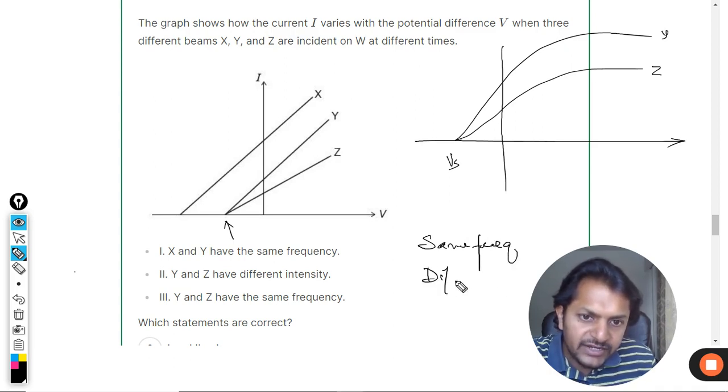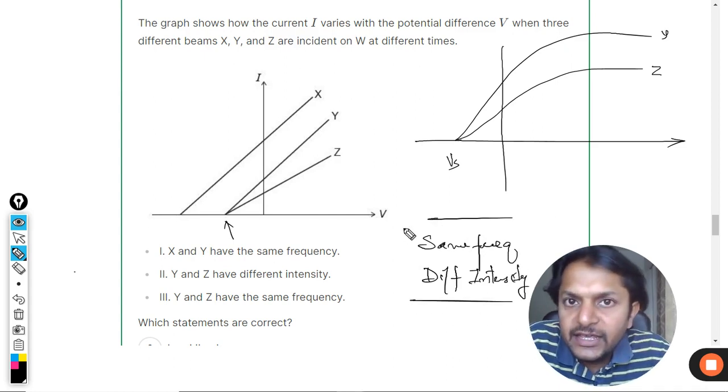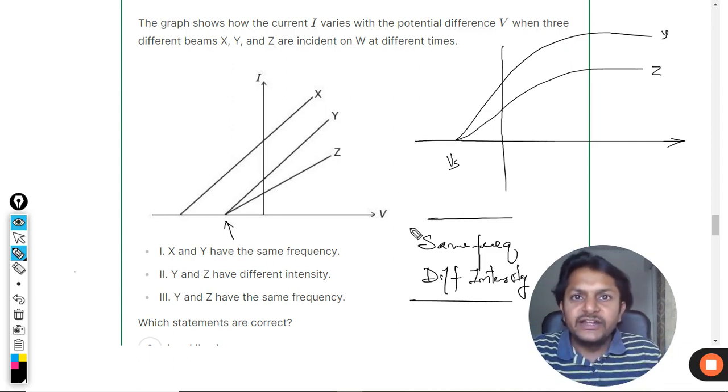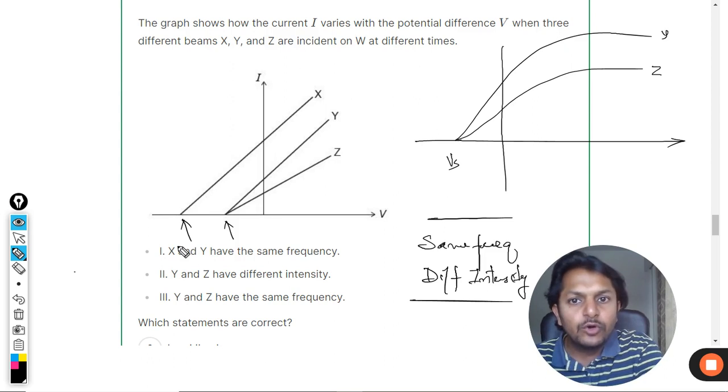But different intensity. Same frequency and different intensity. And if you have different intensity, like the stopping potential is directly related with the frequency, so if this stopping potential is more, it means that the frequency is bigger, frequency is more for X.